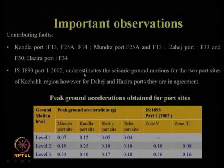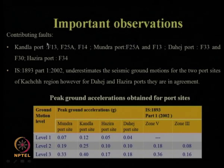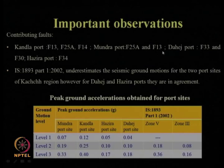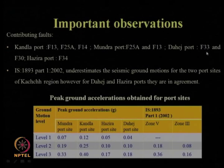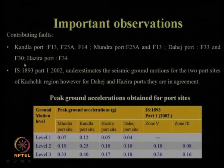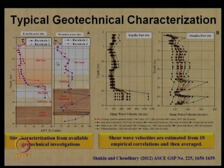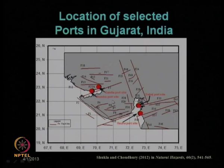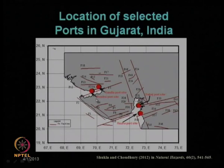Important observations from this analysis: for Kandla port, the contributing faults are F13, F25A, and F14. For Mundra port it is F13. For the Dahej port, the responsible faults are F33 and F30. For Hazira port it is F34. These are identified through seismic hazard analysis and the corresponding UHS.